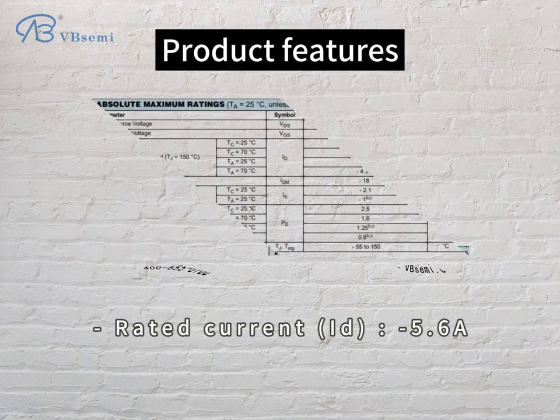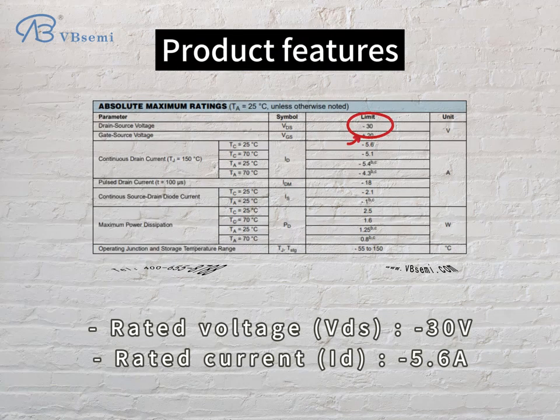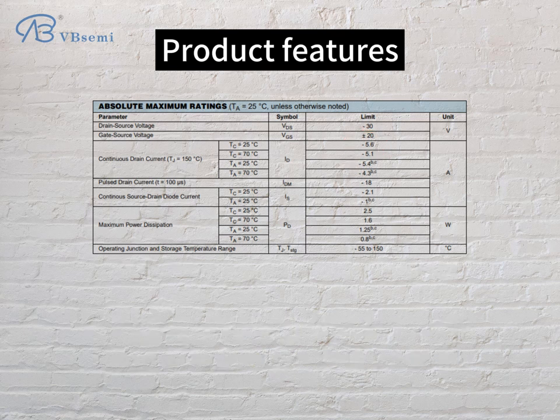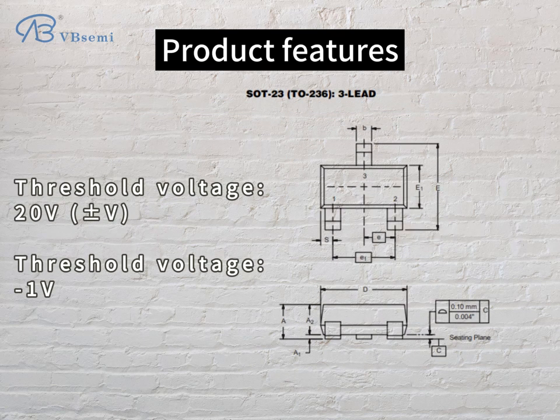Product features: Rated Voltage VDS -30V, Rated Current -5.6A, Breakdown Voltage 20V, Threshold Voltage -1V.